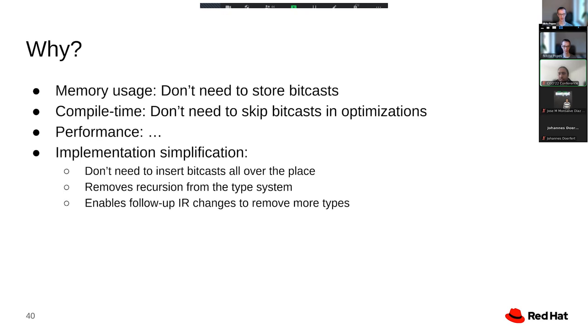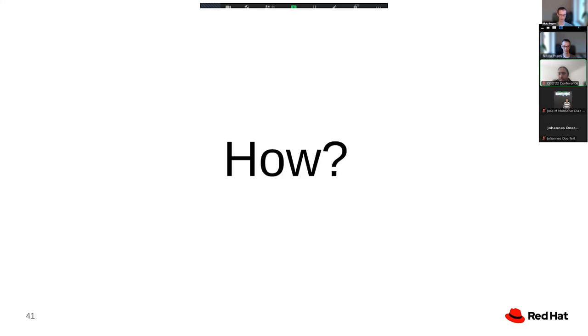With opaque pointers, that goes away. In that case, this simply becomes a struct with an opaque pointer member. And that can be constructed atomically and all the types in the type system can become immutable. There are also a couple of other follow-up IR changes we can make once we only support opaque pointers. But that part I'm going to talk about at the very end of the presentation.